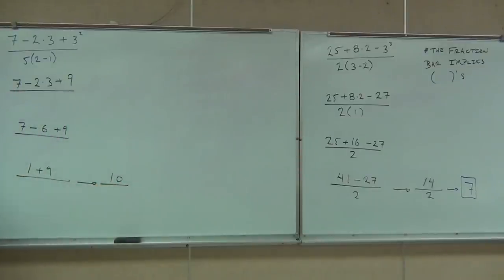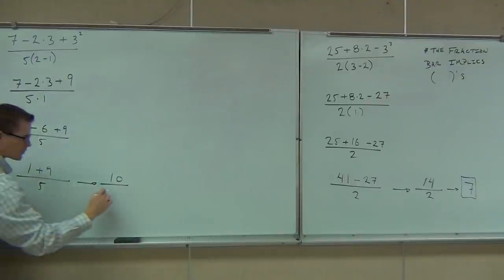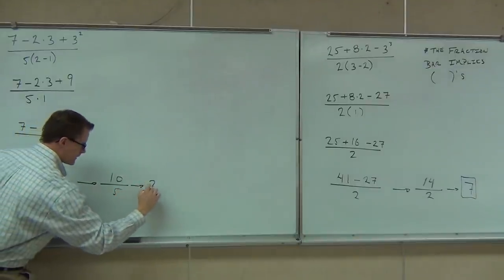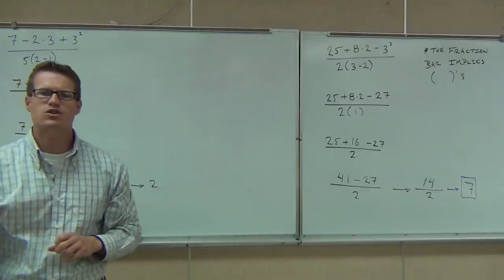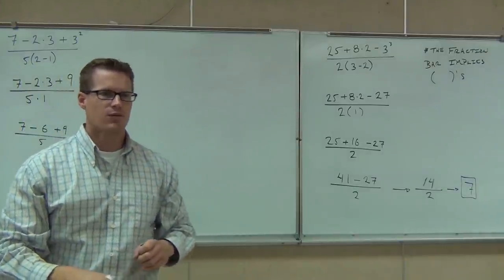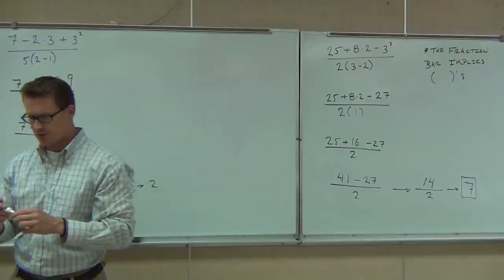So the bottom says we're going to do 5 times 2 minus 1. That 2 minus 1 comes first because it is in parenthesis. That gives us 5 times 1, you can have parenthesis or not, it doesn't matter. 5 times 1 is 5. We'll write that a couple more times. That's exactly right. How many of you were able to get 2? Good. If you didn't, that's okay. Why don't you go back and try this again next time. If you want to follow this on the video, you can do that.